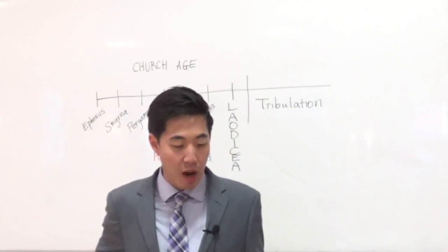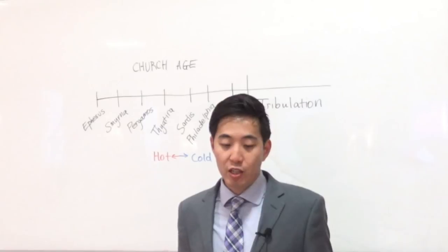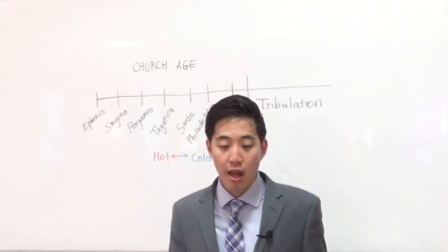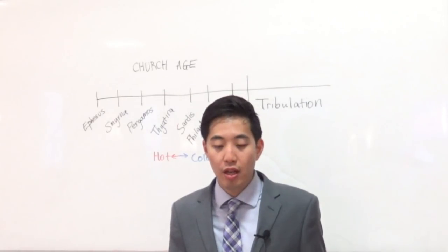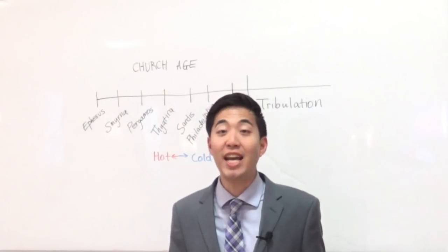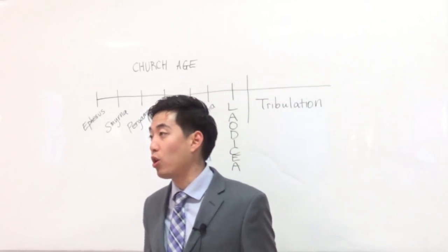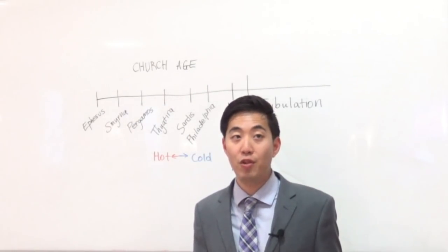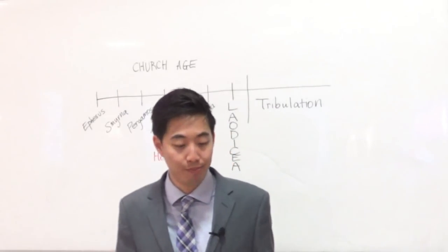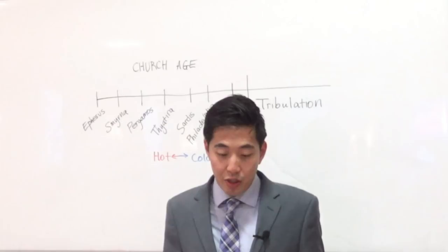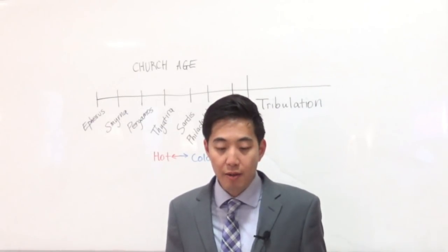Let's look at Revelation 3, verse 19. As many as I love, so God loves these people, the Laodiceans, I rebuke and chasten. That's why God has to rebuke them. So chasten, that's an old English word where it means discipline. It can even mean scourging sometimes at Hebrews chapter 12, like beating you. God has to beat the senses into you. Thus, be zealous, therefore, and repent.